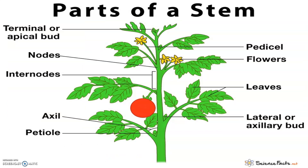What are the features that distinguish a stem from a root? The stem is the ascending part of the axis bearing branches, leaves, flowers and fruits. It develops from the plumule of the embryo of a germinating seed. The stem bears nodes and internodes. The regions of the stem where leaves are born are called nodes, while the portions between two nodes are called internodes. The stem bears buds which may be terminal or axillary.